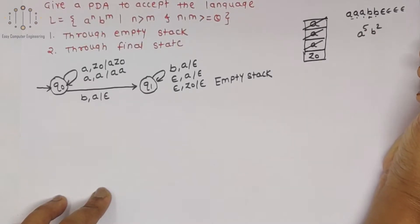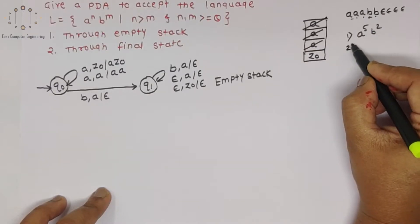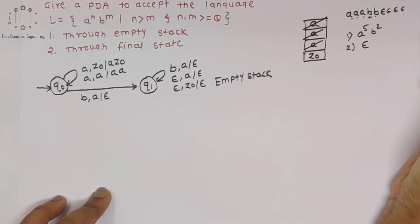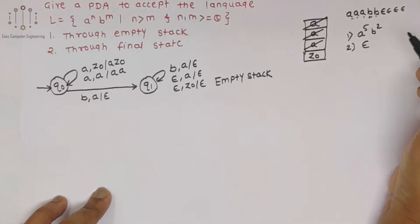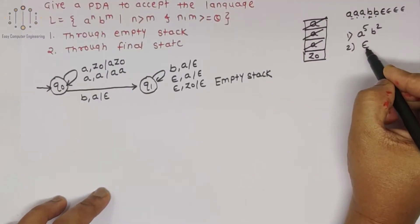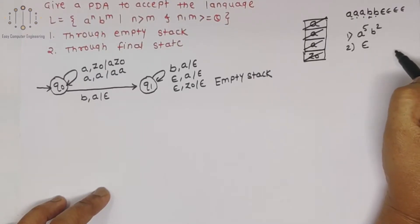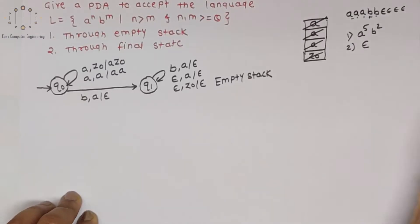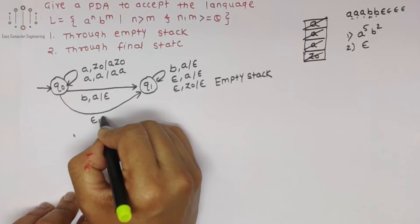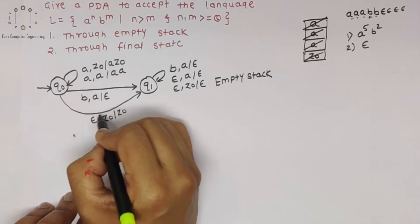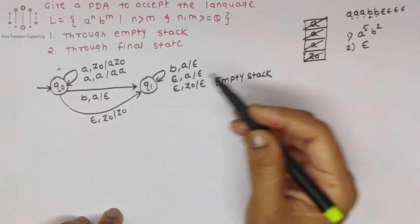Now the second condition: only epsilon is the input string, because n, m are greater than or equal to zero, so epsilon should be accepted. Incoming string is epsilon and stack has Z0 — how do we show the empty stack condition? If incoming string is epsilon and stack has Z0, we keep Z0 as it is for this transition, then for the next epsilon we pop it. In this way we can show acceptance of epsilon.